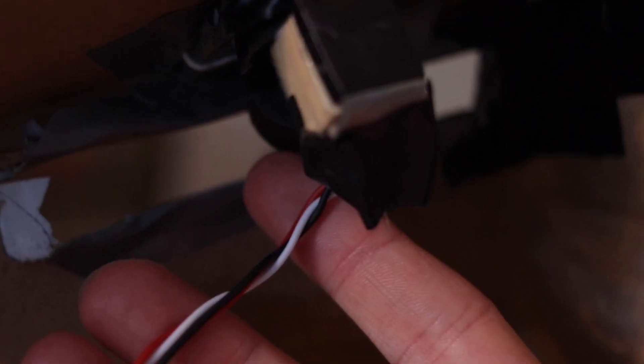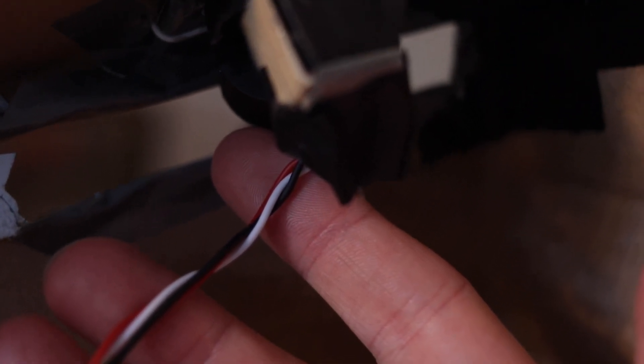There's three wires going out: power, ground and a signal. And of course in the other end these are going to the Arduino, the signal going into one of the analog ports. So let's try it out.